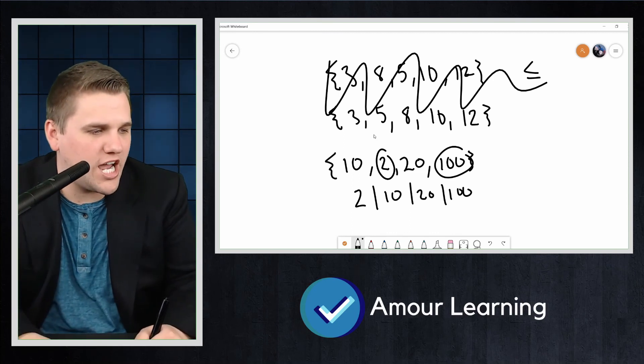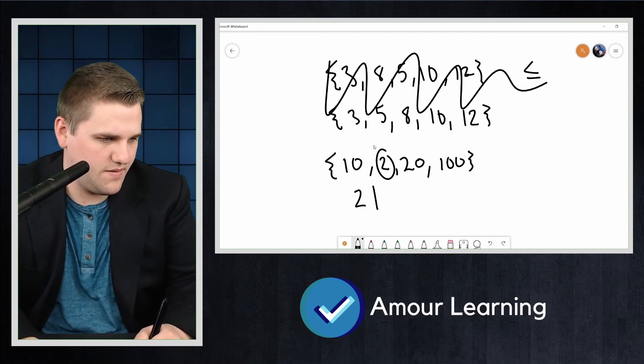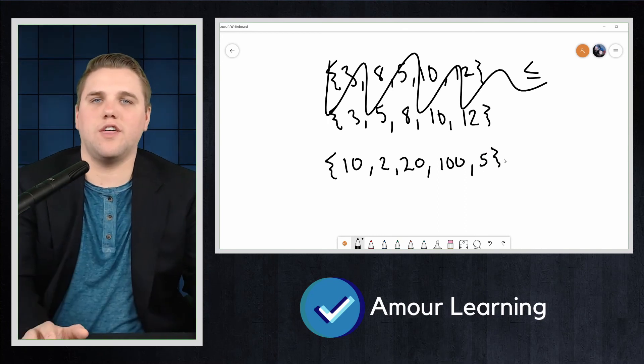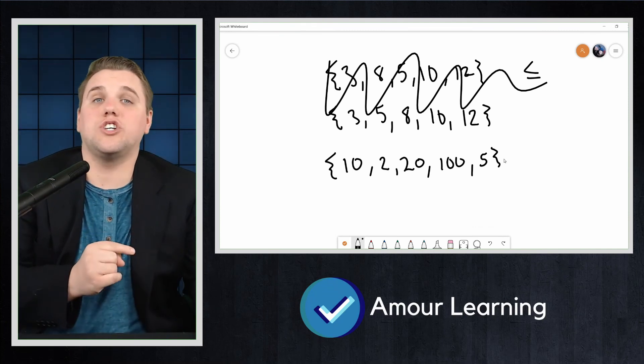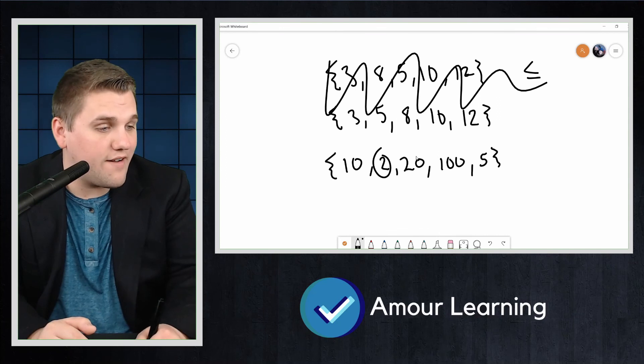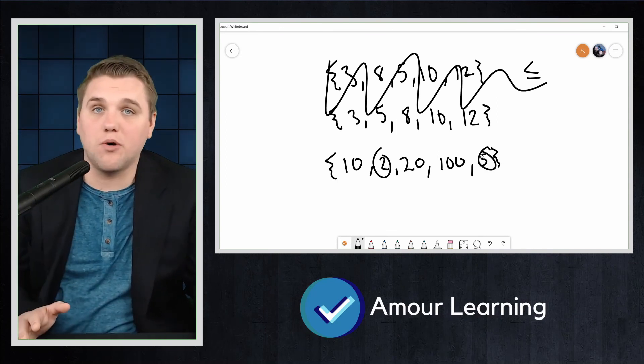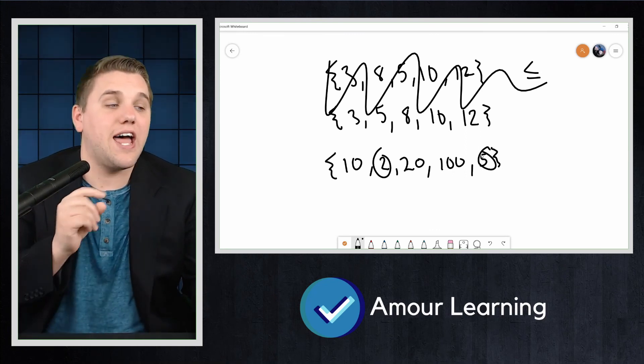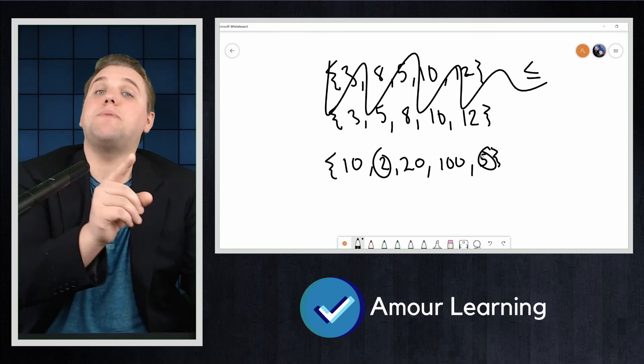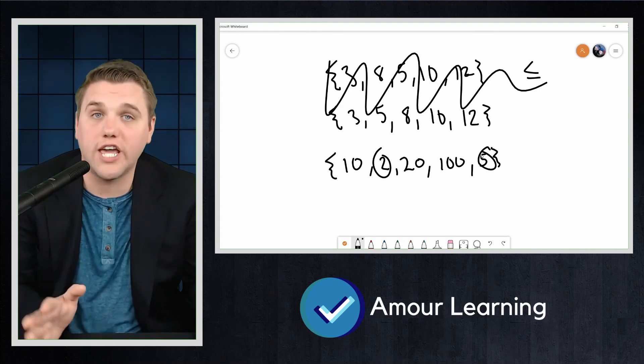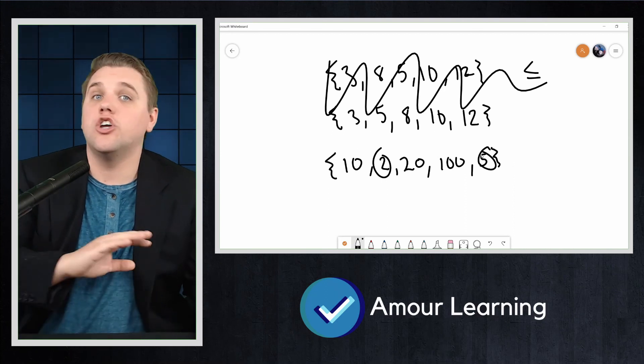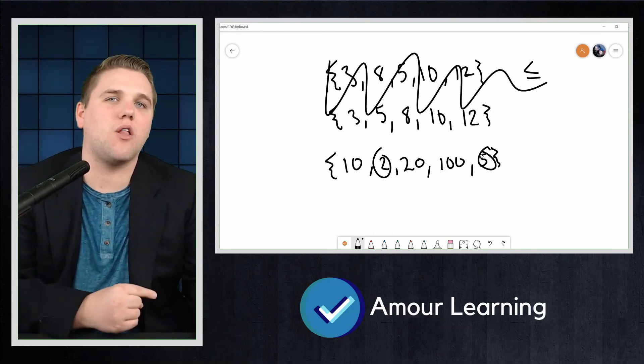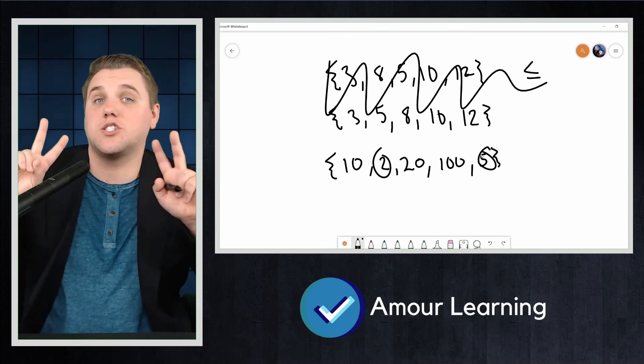But if we change this a little bit and throw in a 5 there, this will throw everything off. You won't be able to determine which is smallest because 2 and 5 are not comparable under this partial ordering of divides. You might be tempted to say that 2 is the least element, but that's because you are ordering the set under the wrong relation. Under the divides relation, 2 and 5 are not even relatable whatsoever. We can't tell which one is smaller, and so we can't tell which one is the smallest.